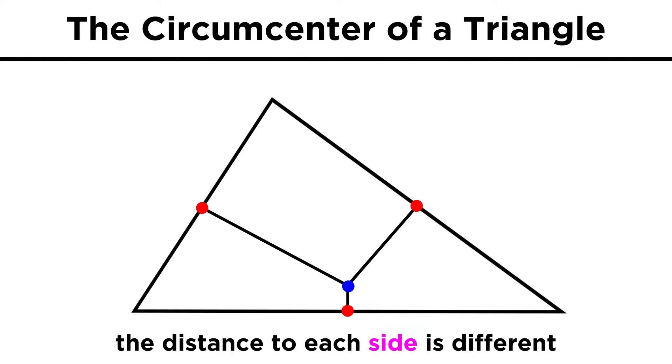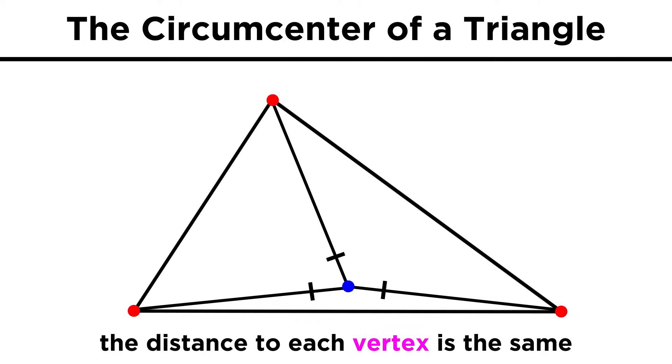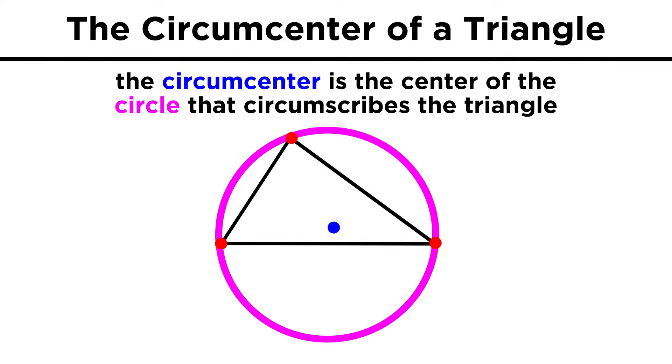While the distance to the sides of the triangle may differ, the circumcenter will be equidistant from the vertices of the triangle, meaning that the distance from the circumcenter to each corner is the same, no matter what type of triangle we are looking at. The circumcenter of the triangle will also be the center of the circle that circumscribes that triangle. This is the circle that contains all three vertices of the triangle.